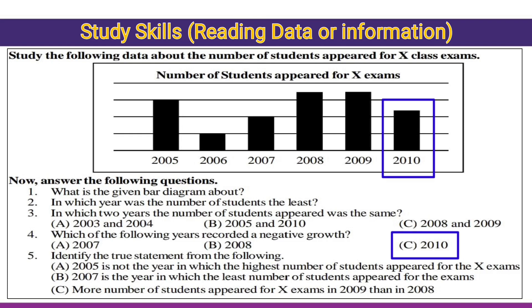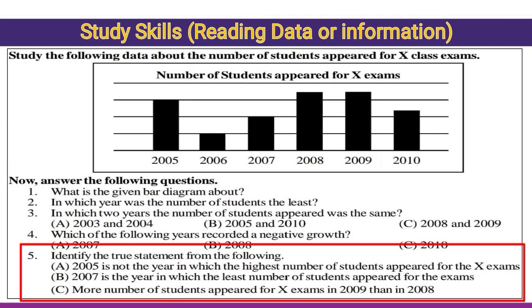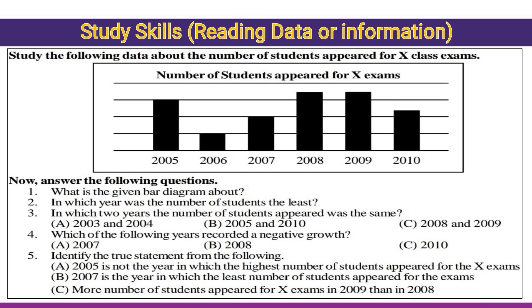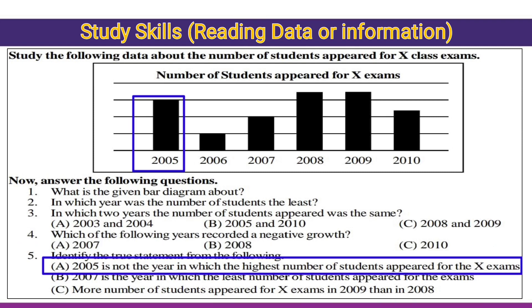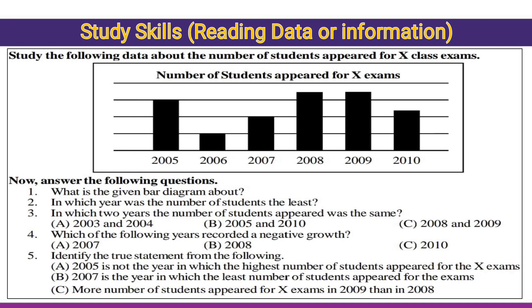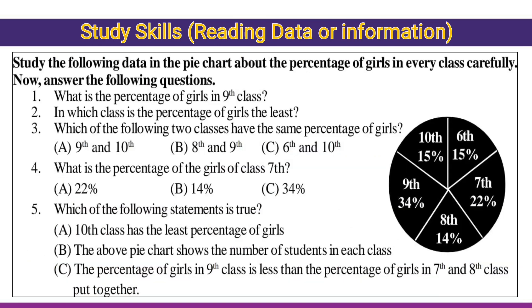Fourth question: which of the following years recorded a negative growth? The answer is 2010. Fifth question: identify the true statement from the following. '2005 is not the year in which the highest number of students appeared for the 10th exam' — this is absolutely right. Let's get into one more diagram.